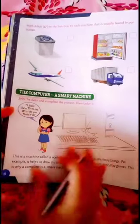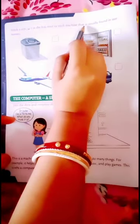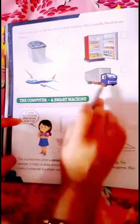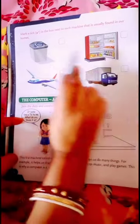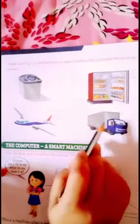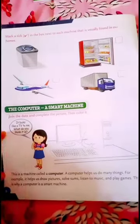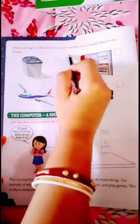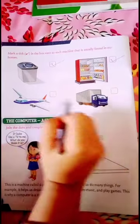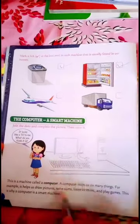Now students, please turn to page number 8. Mark a tick in the box next to each machine that is usually found in our homes. So children, there are four pictures: one of a washing machine, one of a fridge, one of an aeroplane, and one of a truck. So what do you think? Which two things are found inside our homes? Yes, you are correct. We find the washing machine and the refrigerator in our homes. The aeroplane and truck are outside the house.